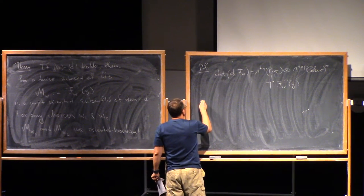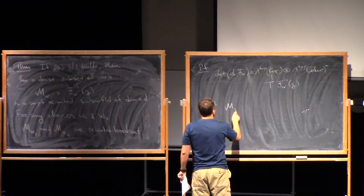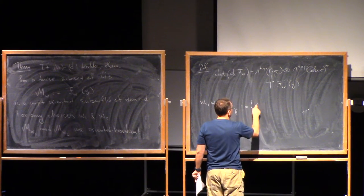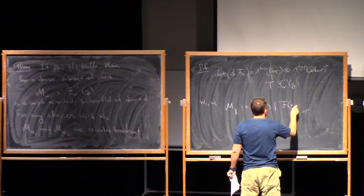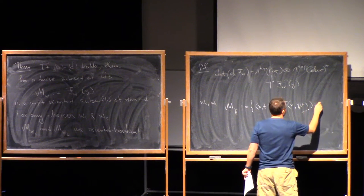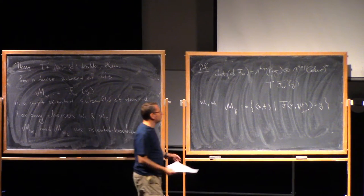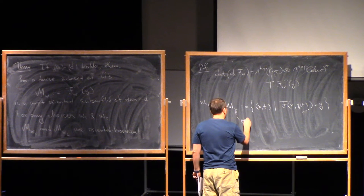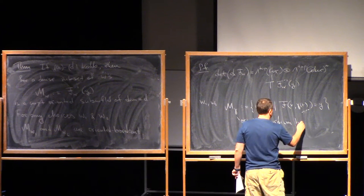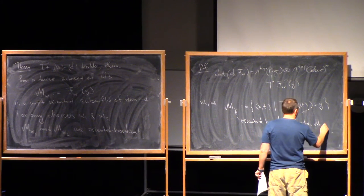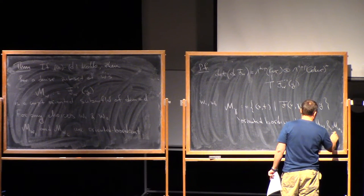Now, if we have any two w0 and w1, again you consider m gamma. This is a set of xt such that f of x t is y. Again, you show that this is the compact oriented manifold with boundary as before, and this is actually an oriented bordism between mw1 and mw2. And that's the end of the proof.